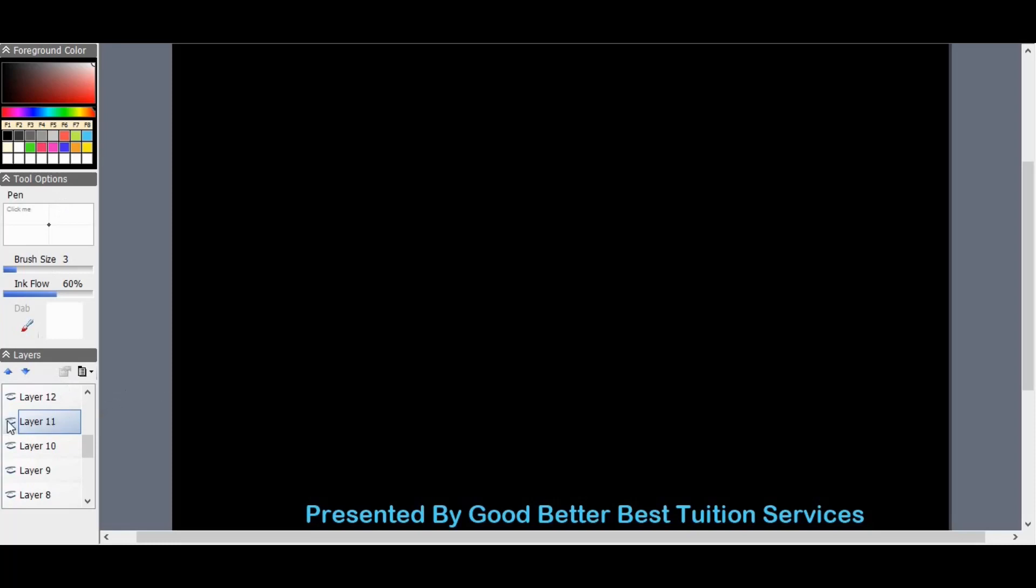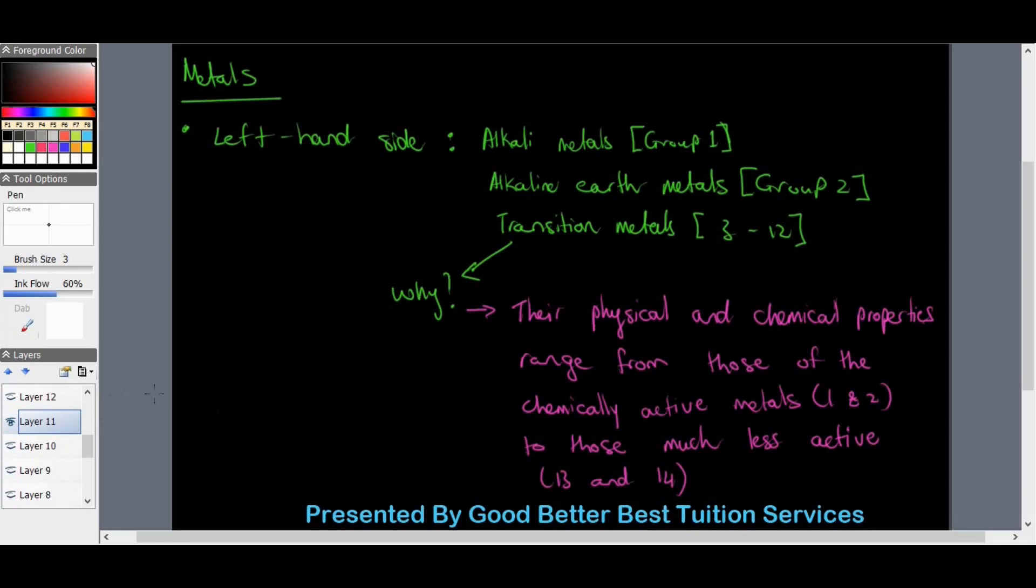Metals is the next group we're going to look at. Metals are usually found on the left hand side of the periodic table and they're broken up into subgroups where we have alkali metals which are your group one: lithium, sodium, potassium. Then we have alkaline earth metals which is group two: magnesium, beryllium, calcium.